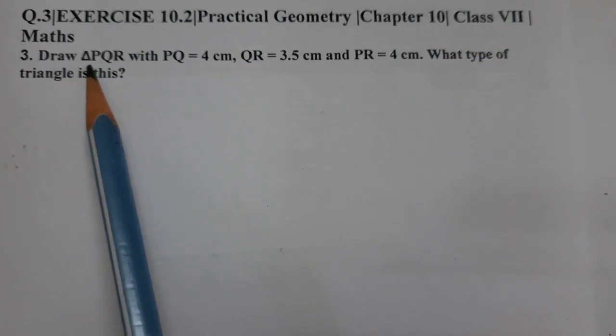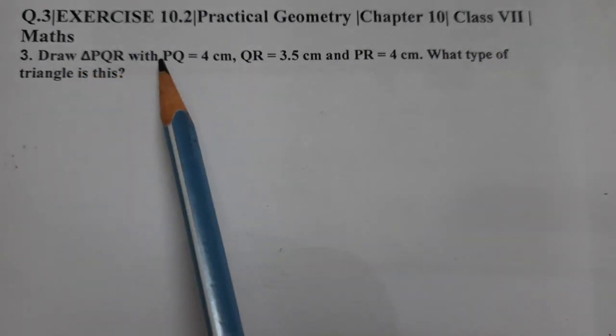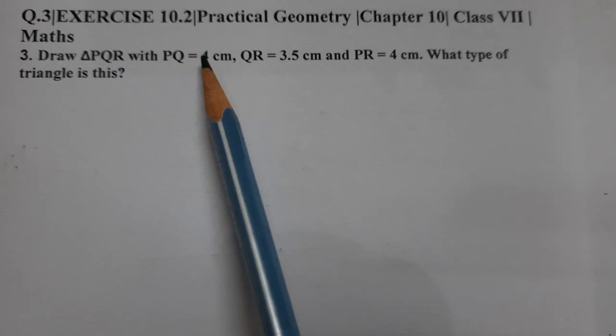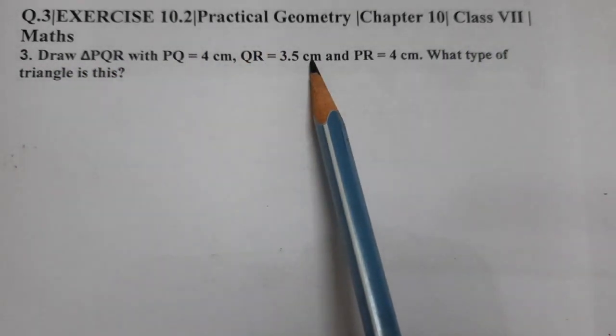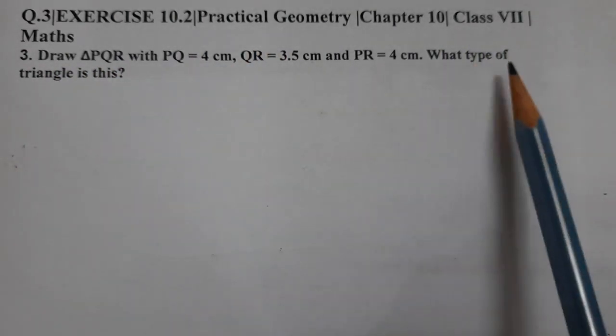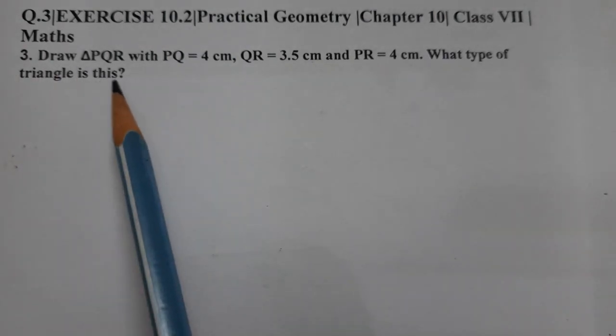Draw triangle PQR with PQ equals to 4 centimeter, QR 3.5 centimeter, and PR 4 centimeter. What type of triangle is this?